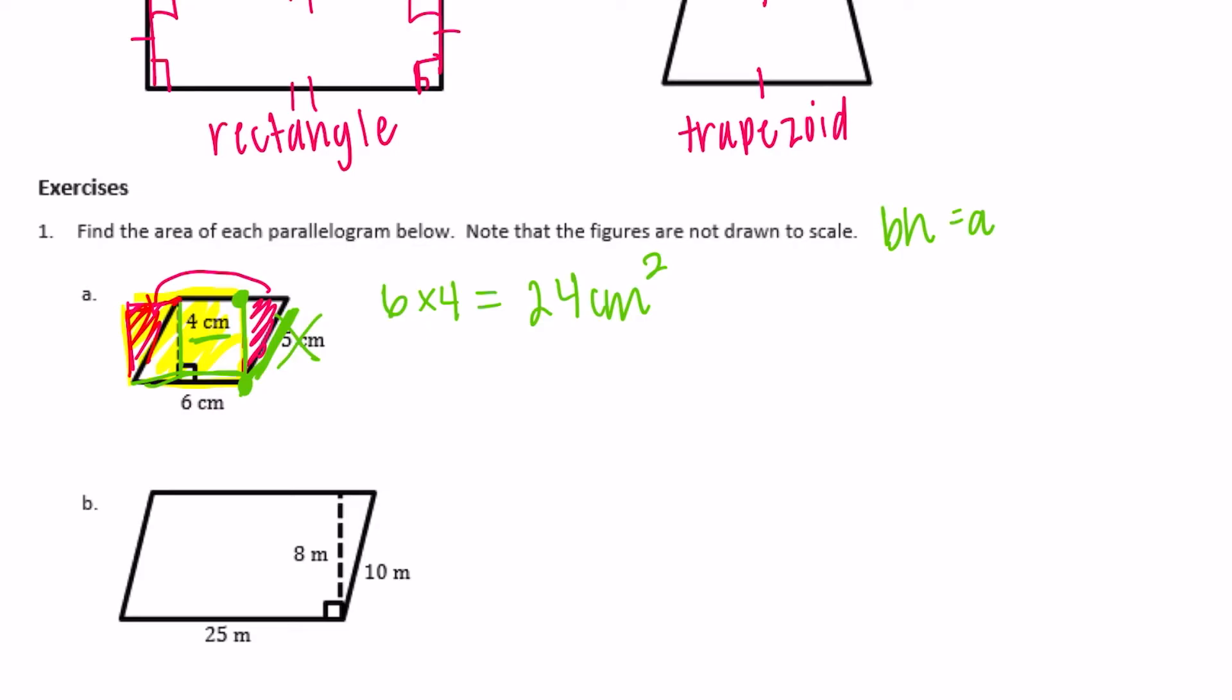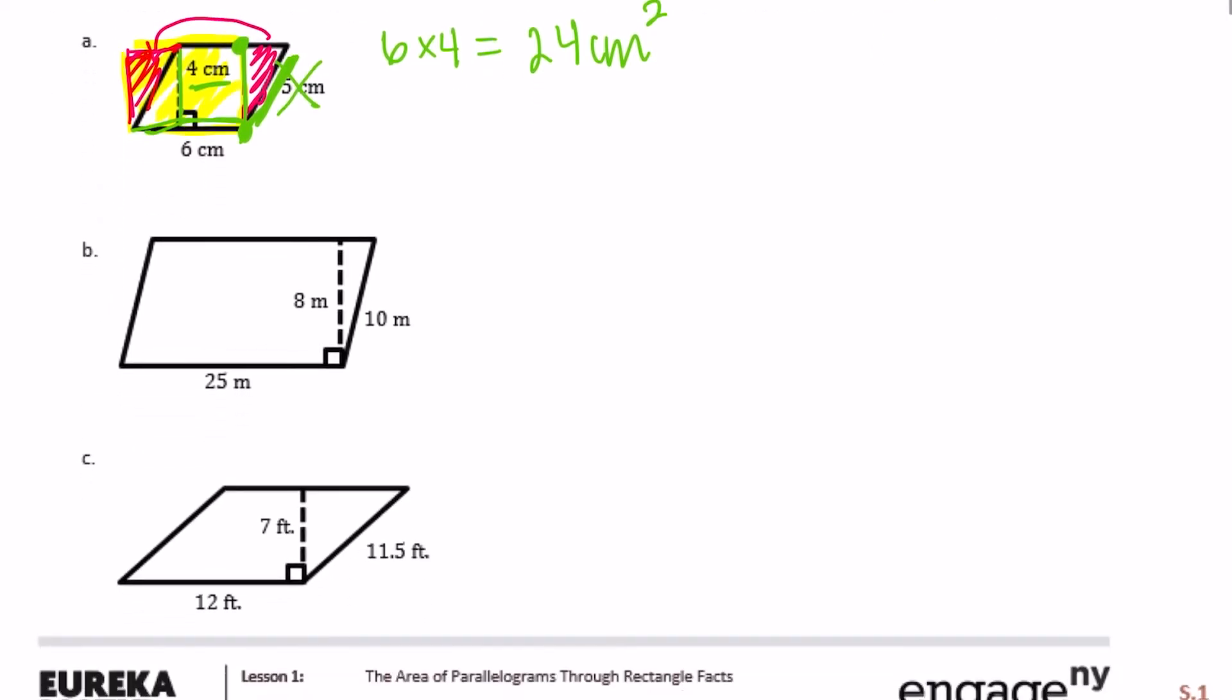The next one we have another parallelogram. Again, if I took this piece right here, cut that off and moved it over here, that will give us a rectangle. So we're going to do base times height equals area. Here the base is 25 meters, the height is 8 meters, so 25 times 8 would be equal to 200 meters squared.